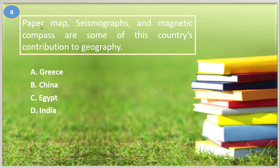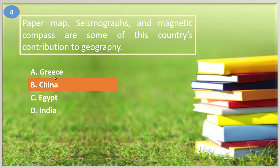Number four. Paper maps, seismographs, and magnetic compass are some of this country's contributions to geography: A. Greece, B. China, C. Egypt, D. India. The answer is B, China. Greece pioneered geographic writings. Egypt created the first sundial and geography writings. India was famous for the invention of the concept of zero and the designated sundial. China's contributions are the paper map, seismograph, and magnetic compass.